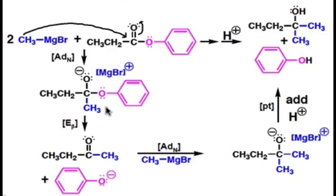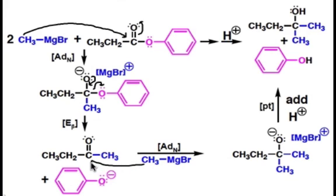Beta elimination occurs in this intermediate because it has a good leaving group in the phenoxide anion. Therefore, the lone pair of electrons flow back down to create the carbonyl again and kick out the phenoxide leaving group. This creates a new ketone species that can be attacked by a second equivalent of Grignard reagent.